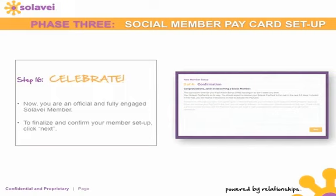Step sixteen — now you can celebrate! You are now an official and fully engaged Solovey member. To finalize and confirm your member setup, click 'Next.' Before you celebrate, make sure you've completed the three things: Phase 1 — Solovey mobile service; Phase 2 — choose your sponsor and set up your social network; Phase 3 — set up your pay card and submit your social security number.